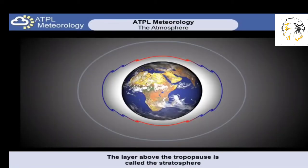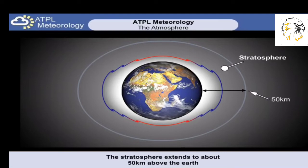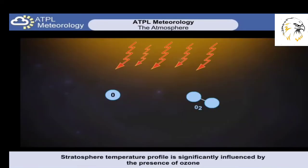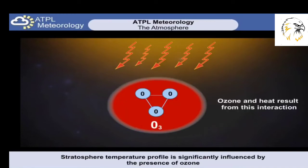Having discussed the troposphere and its upper boundary, the tropopause, we'll now look at the next layer in the atmosphere, called the stratosphere. The stratosphere extends from the tropopause up to about 50 kilometers above the Earth's surface. The temperature structure of the stratosphere is dominated by the presence of ozone. Ozone is formed when solar radiation splits oxygen into its two individual atoms. These are then free to combine with others to form the gas ozone, and this process releases energy into the surrounding air, therefore heating up the part of the atmosphere where ozone can be found.